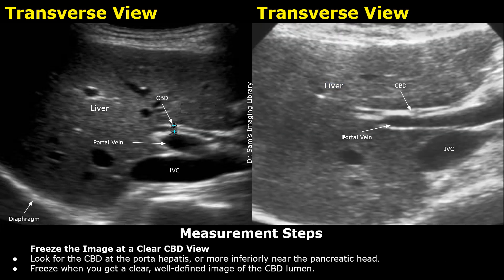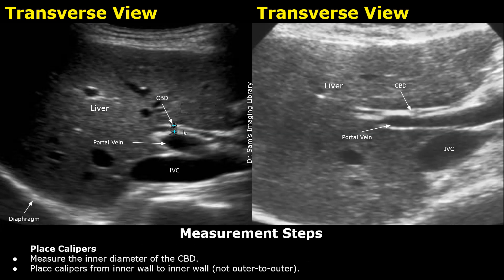Once you get a good view of the common bile duct, freeze the image. Now you can proceed with its measurement. We measure the inner diameter of the common bile duct, so place both calipers at the inner parts of the hyperechoic walls in this manner. Do not place the calipers outside the hyperechoic walls.